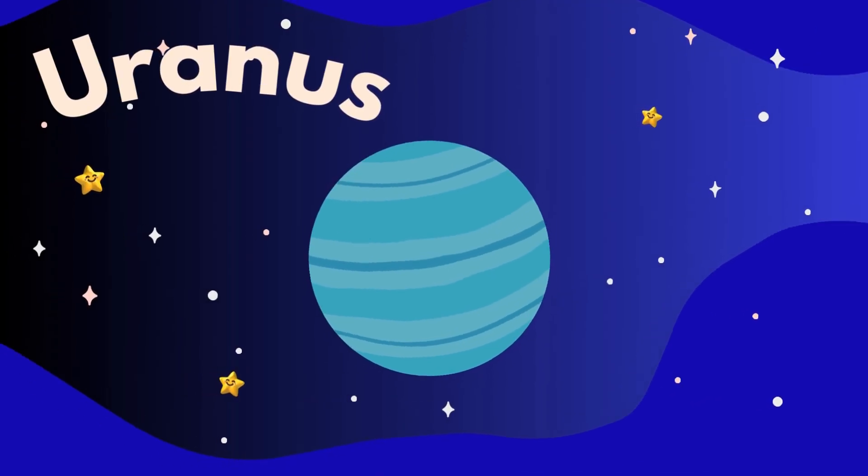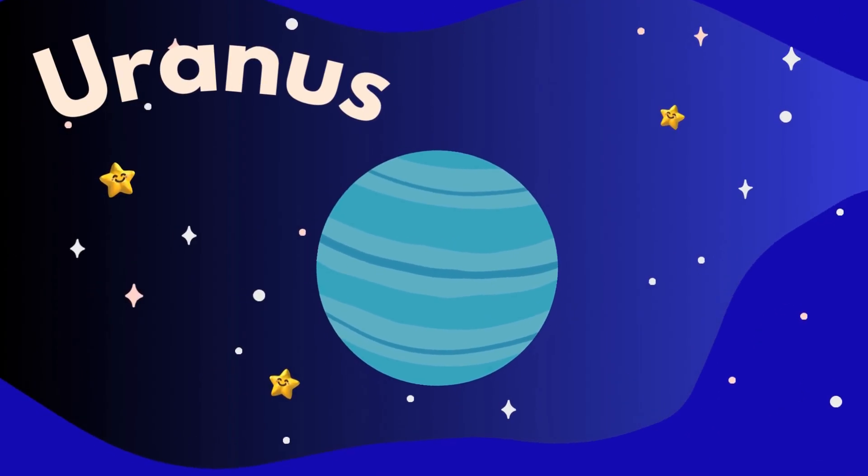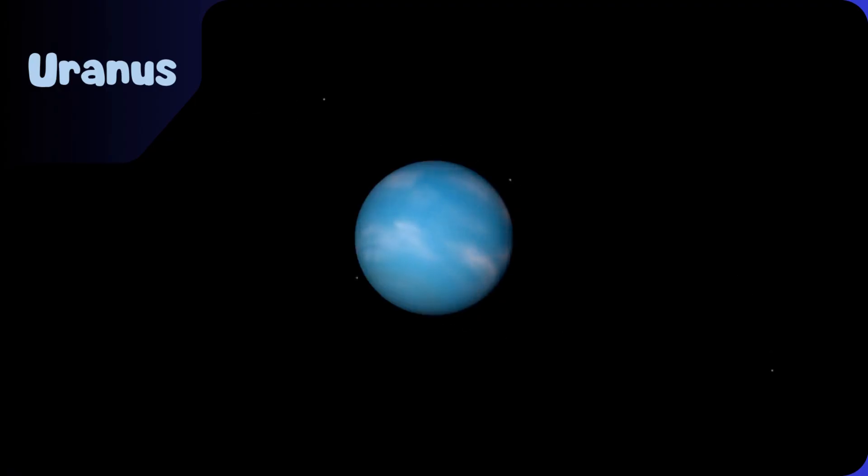Uranus. Uranus spins on its side and looks blue-green.